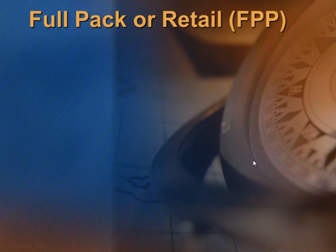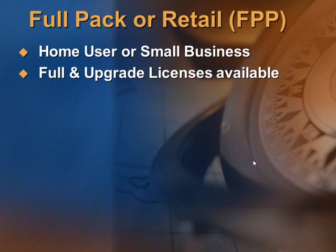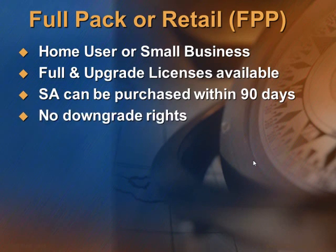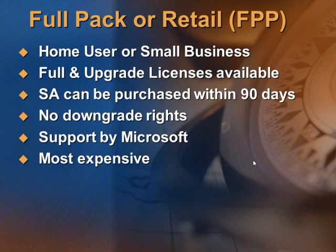Full Pack or Retail. As the name suggests, this is a retail, off-the-shelf product, ideal for home users or very small offices. So if you have a couple of PCs and you need MS Office, you can purchase Office Home and Business Edition. And once you have made the purchase, you can also buy Software Assurance within 90 days.